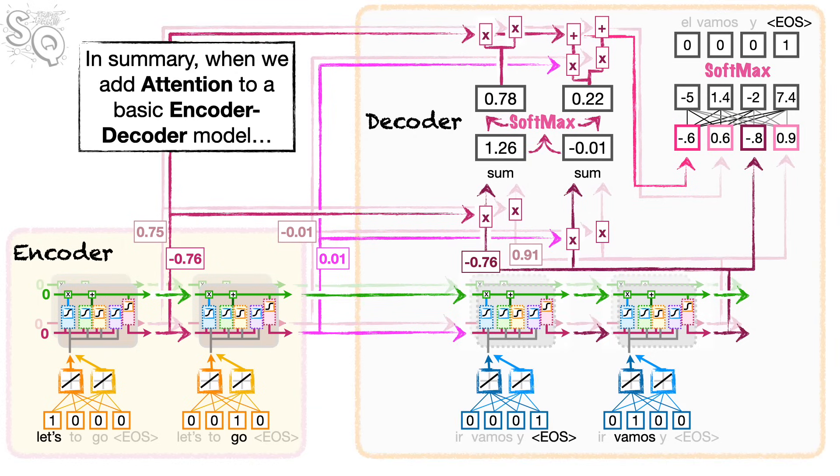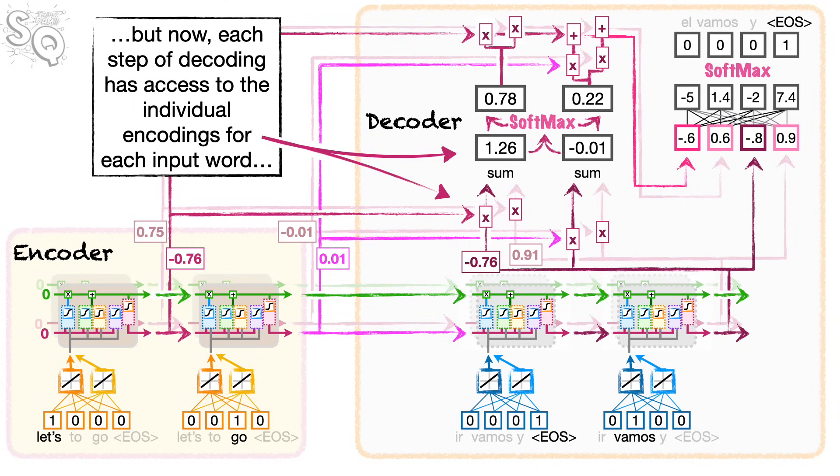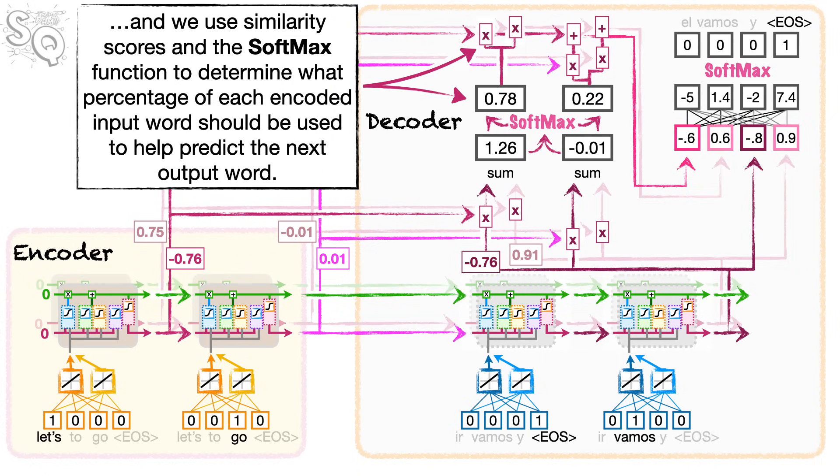In summary, when we add attention to a basic encoder-decoder model, the encoder pretty much stays the same. But now, each step of decoding has access to the individual encodings for each input word. And we use similarity scores and the softmax function to determine what percentage of each encoded input word should be used to help predict the next output word.